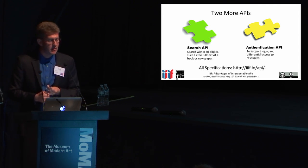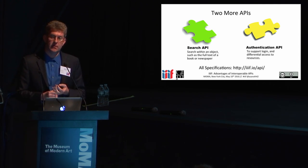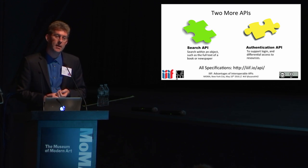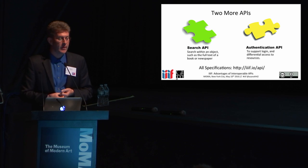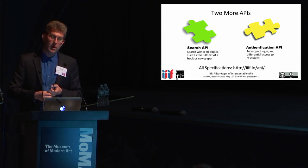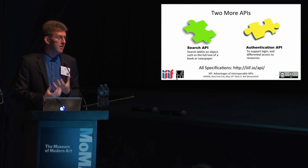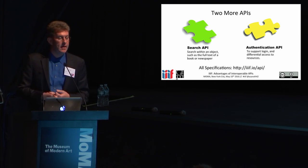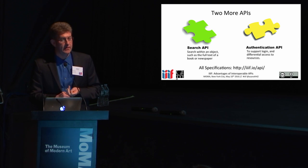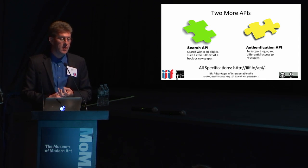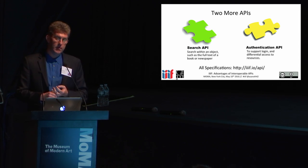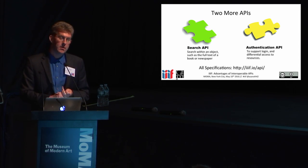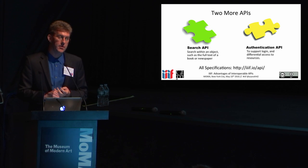There are two more APIs. The search API gives you access to full-text transcriptions of objects such as a book or newspaper — it doesn't allow you to search for objects, so it's not discovery; once you have found the book, it allows you to search within it. The authentication API allows you to support access based on different credentials without getting involved in how those credentials are managed — it just acts as a layer on top of existing systems.